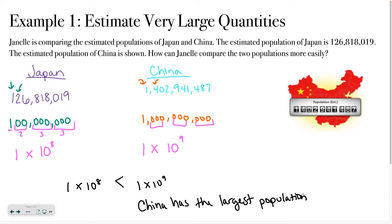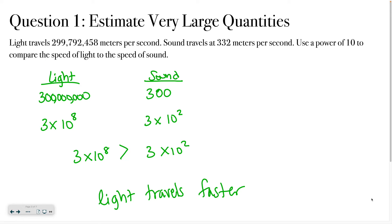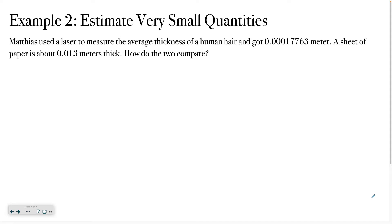Light travels 299,792,458 meters per second. Sound travels at 332 meters per second. Use a power of 10 to compare the speed of light to the speed of sound. Practice writing out your work like we did, then write a simple sentence about which one is faster. Hopefully your work matches what's on the screen and you said that light travels faster.